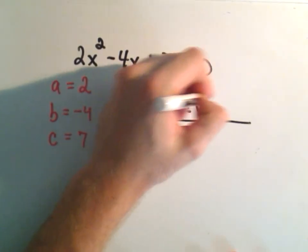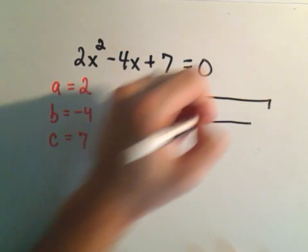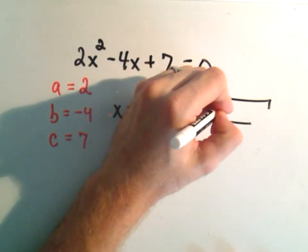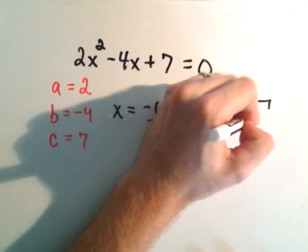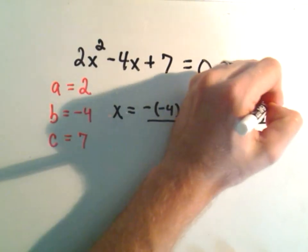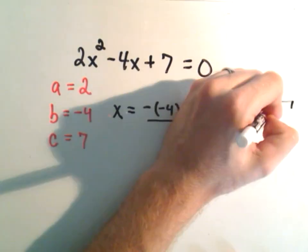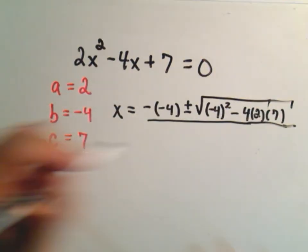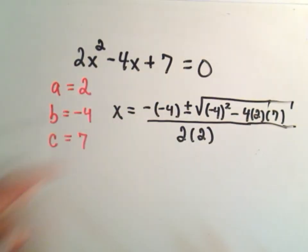We get -b, so I'll get -(-4) plus or minus the square root of b squared, which is (-4)² minus 4 times a, which is 2, times c, which is 7. On the bottom, I have 2 times a, which is 2.